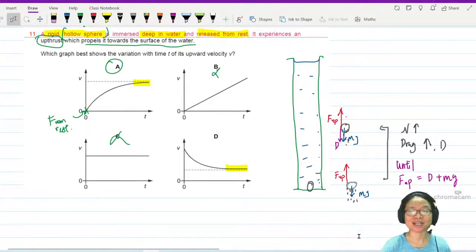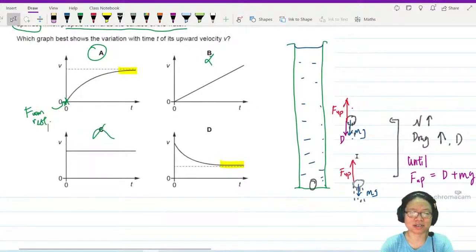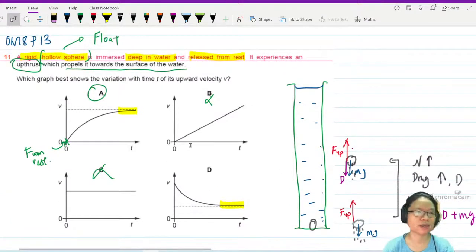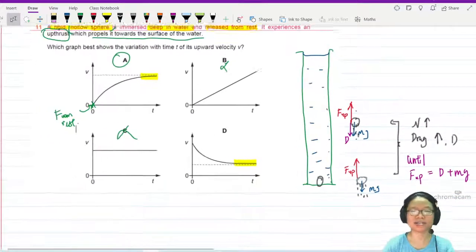If it slows down, it means it decelerates so the downward force is bigger. But that cannot be because the thing is less dense than water. Alright? So this is from Winter 18, Paper 1-3. A combination of drag force and uptrust. Quite standard stuff.